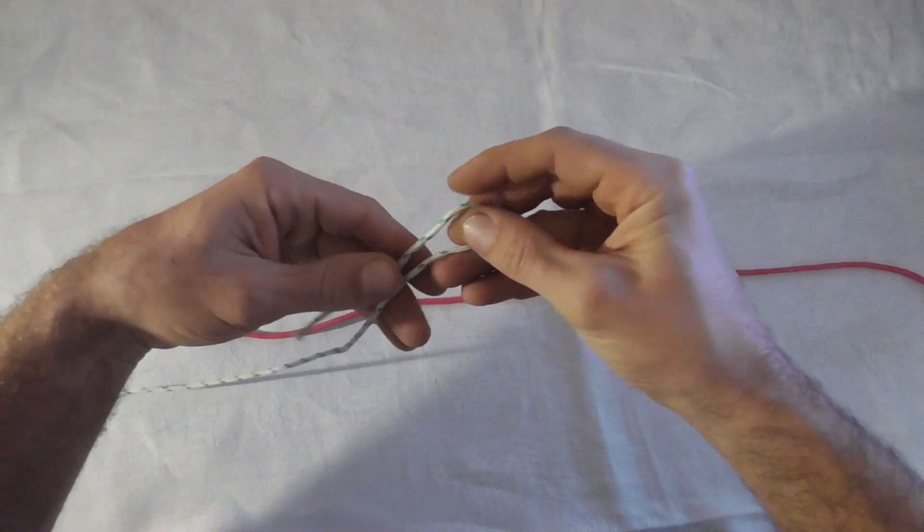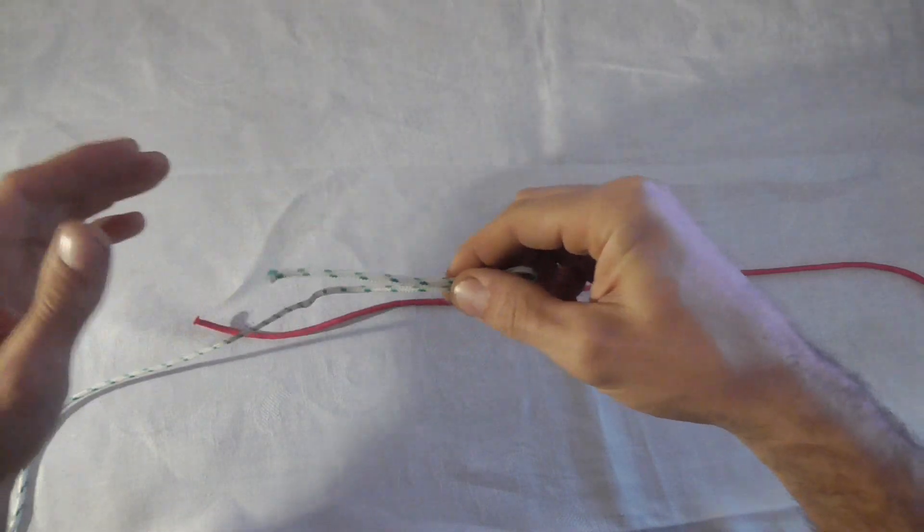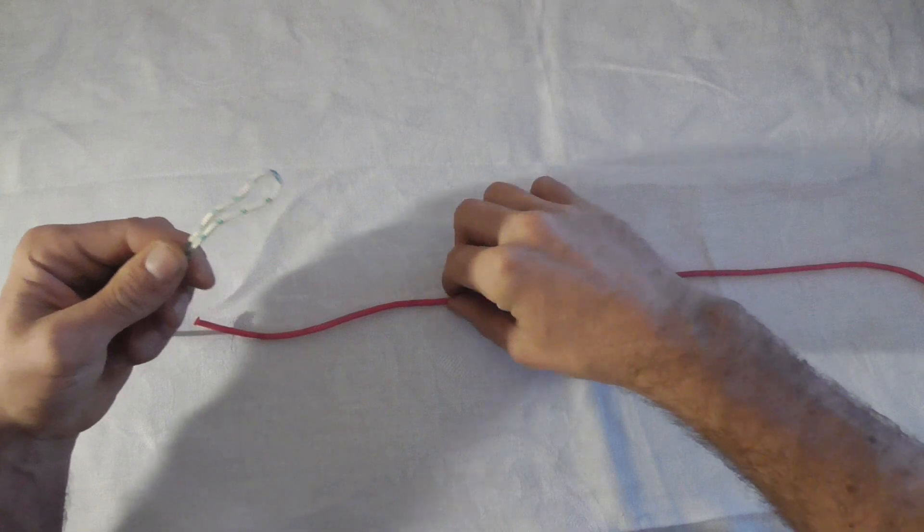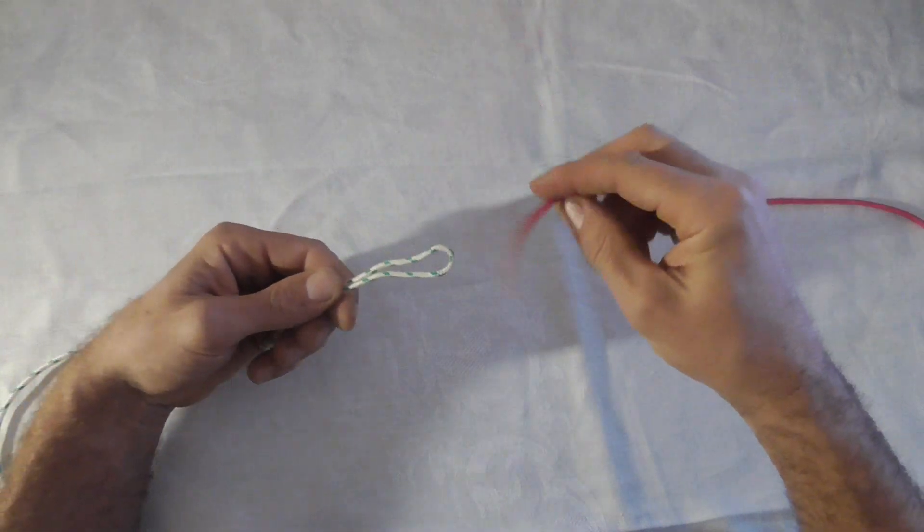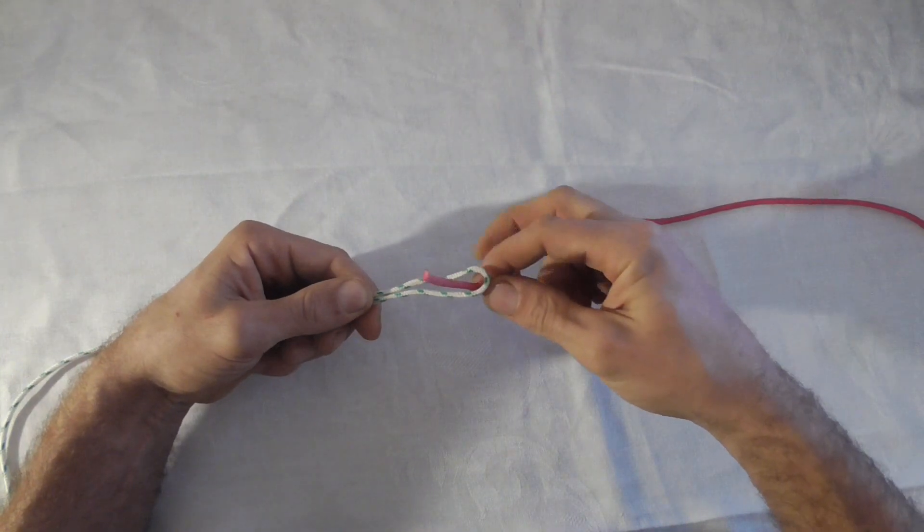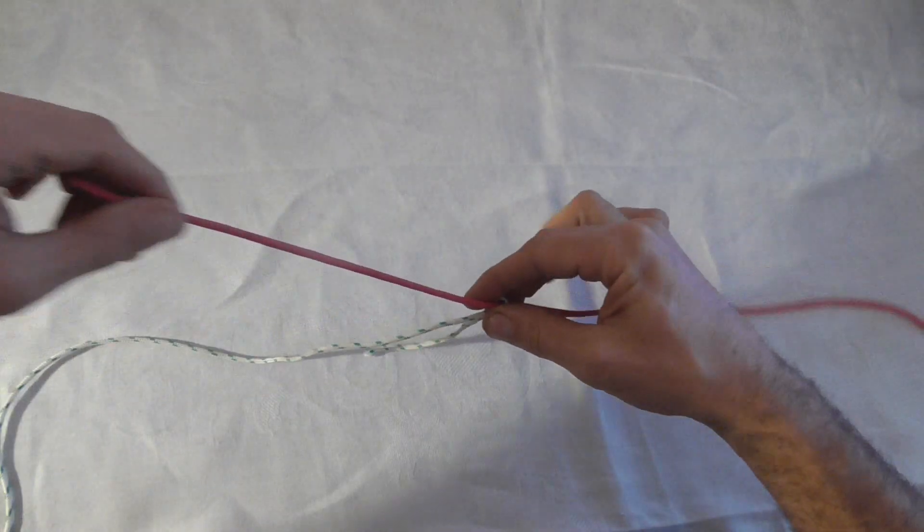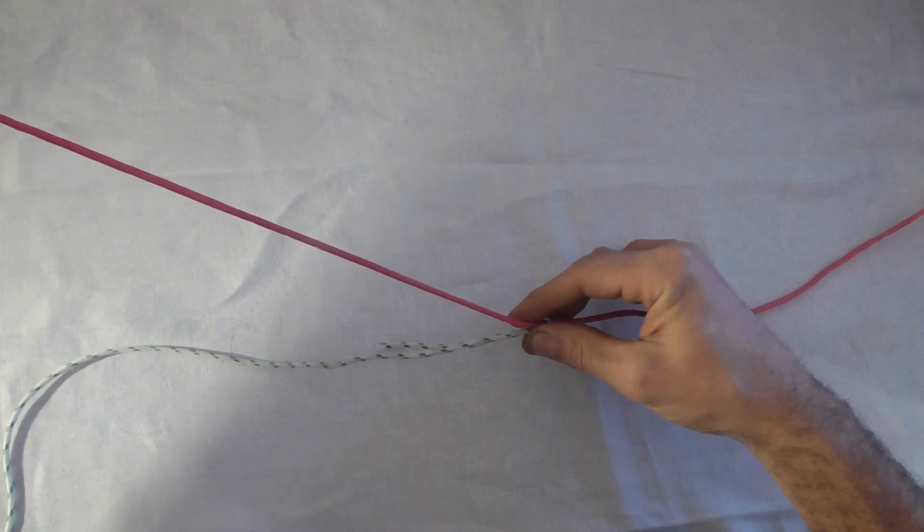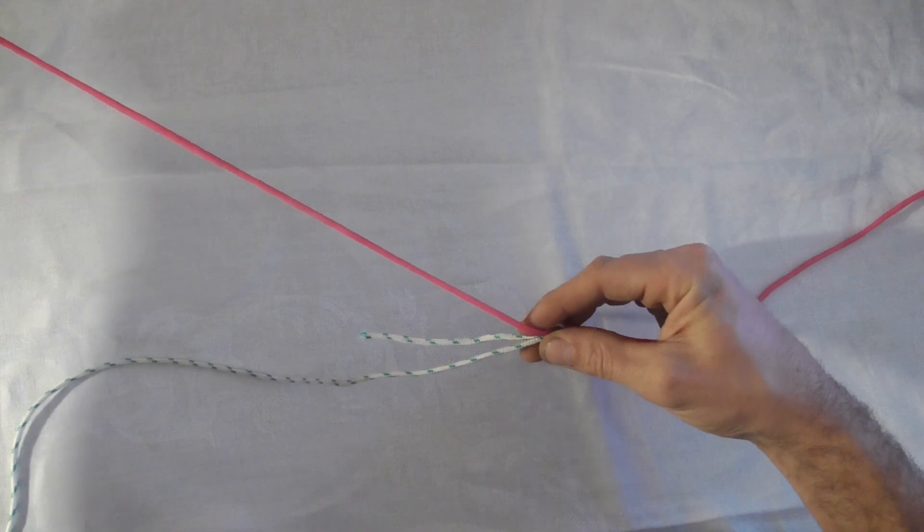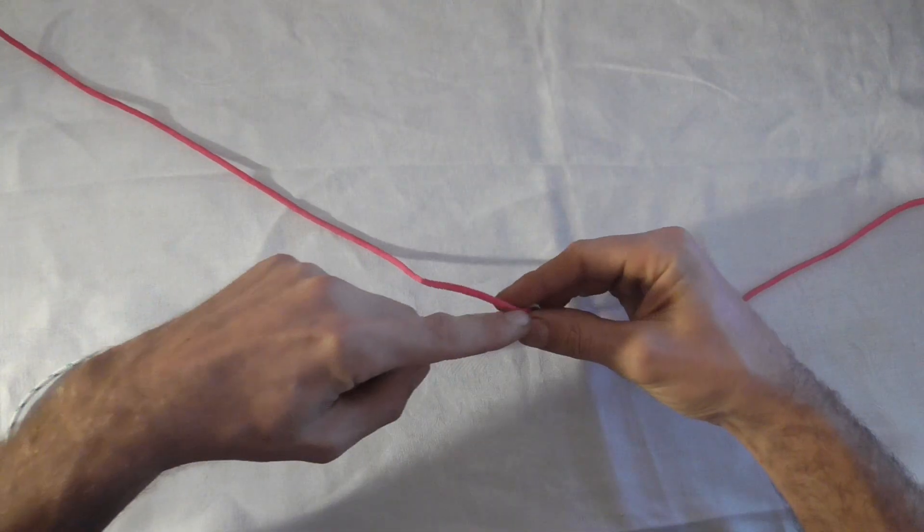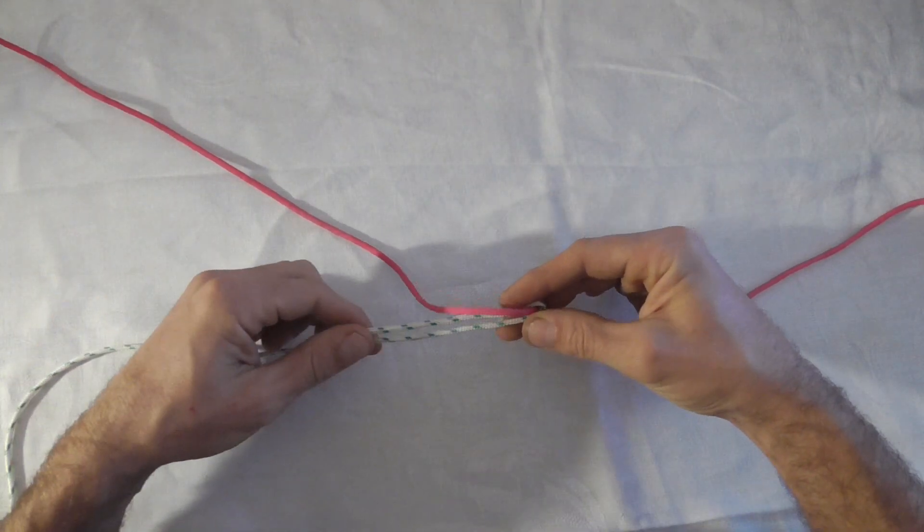To tie this knot we're going to put a bite in our larger line and then we're going to run the other line up through that loop and we're going to give ourselves enough tail to make 10 wraps around both of these parts of the line.